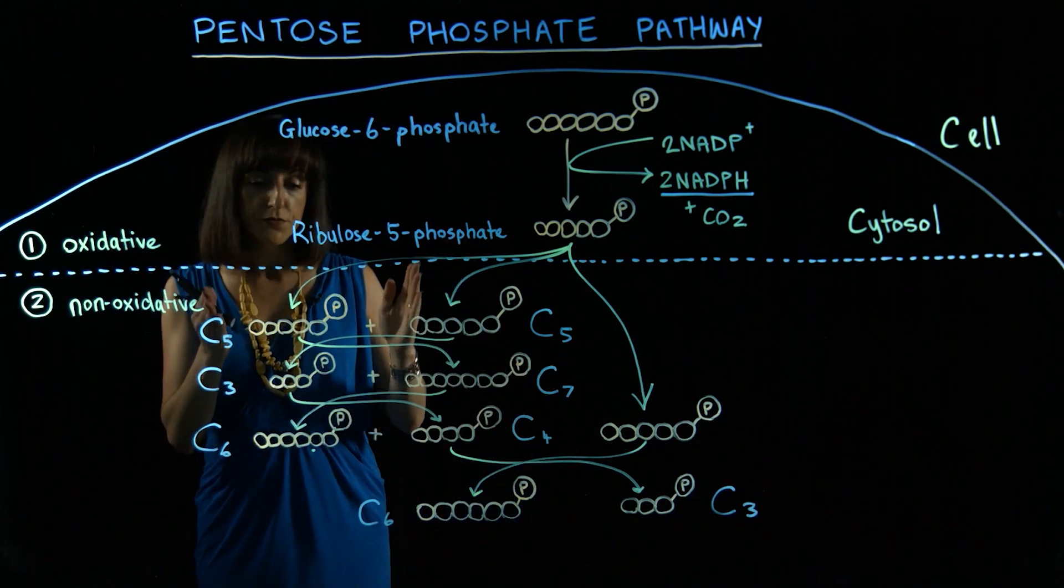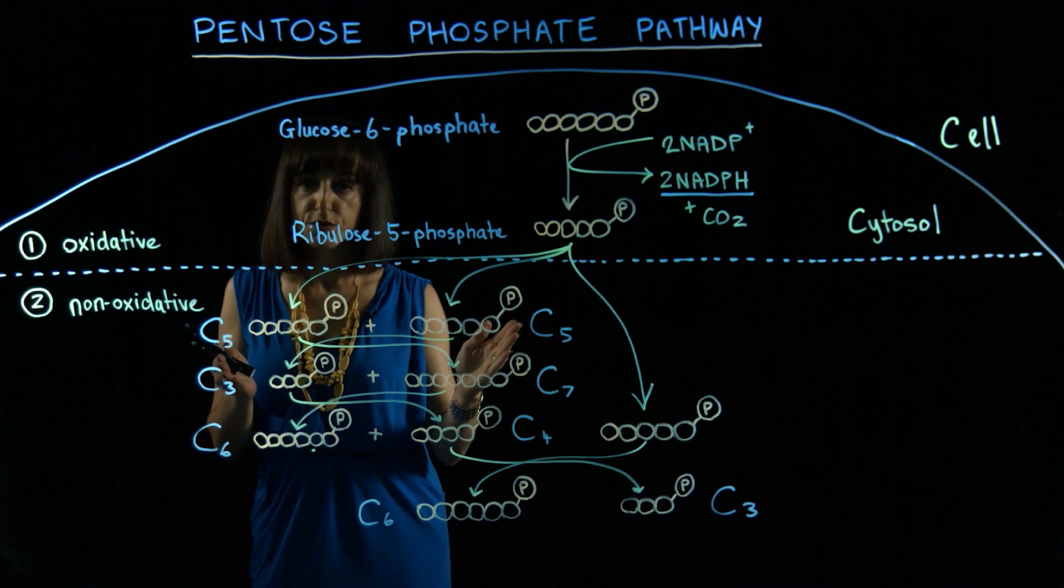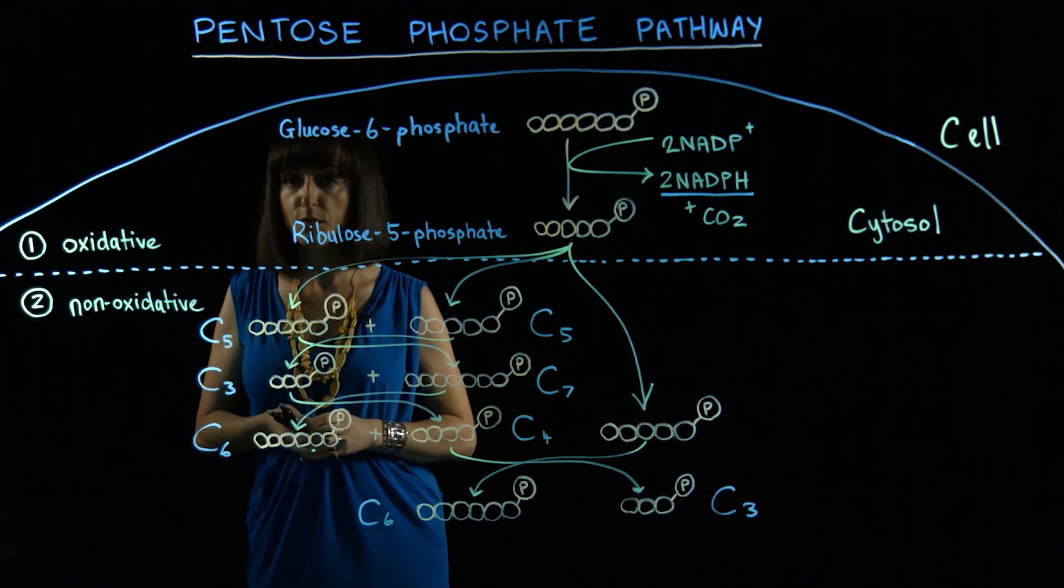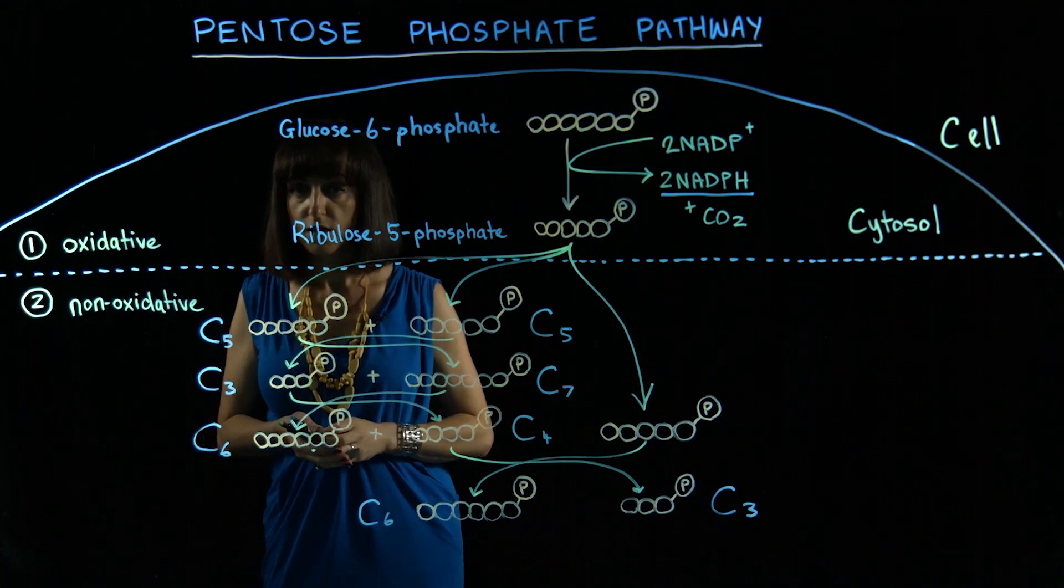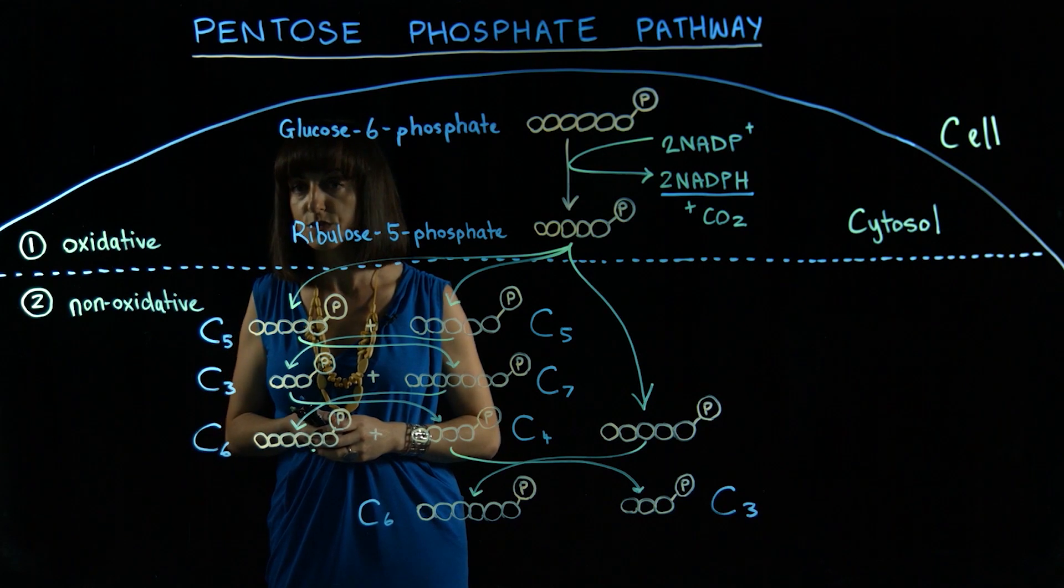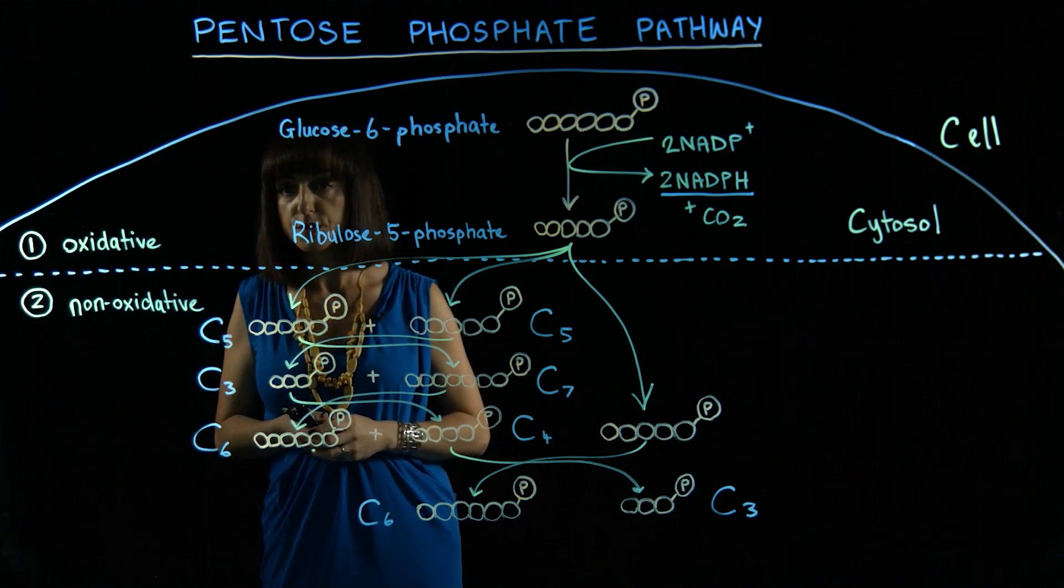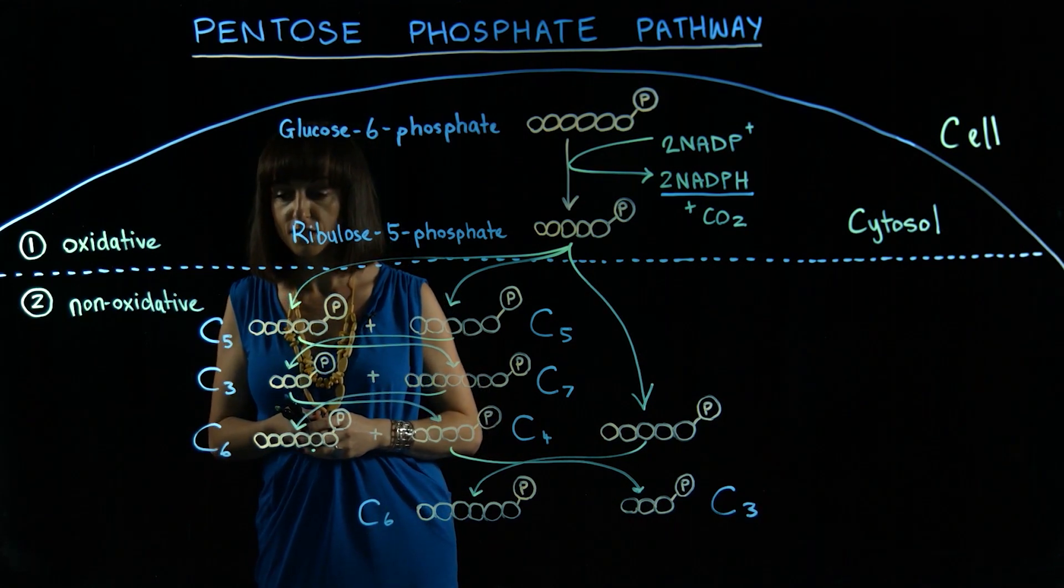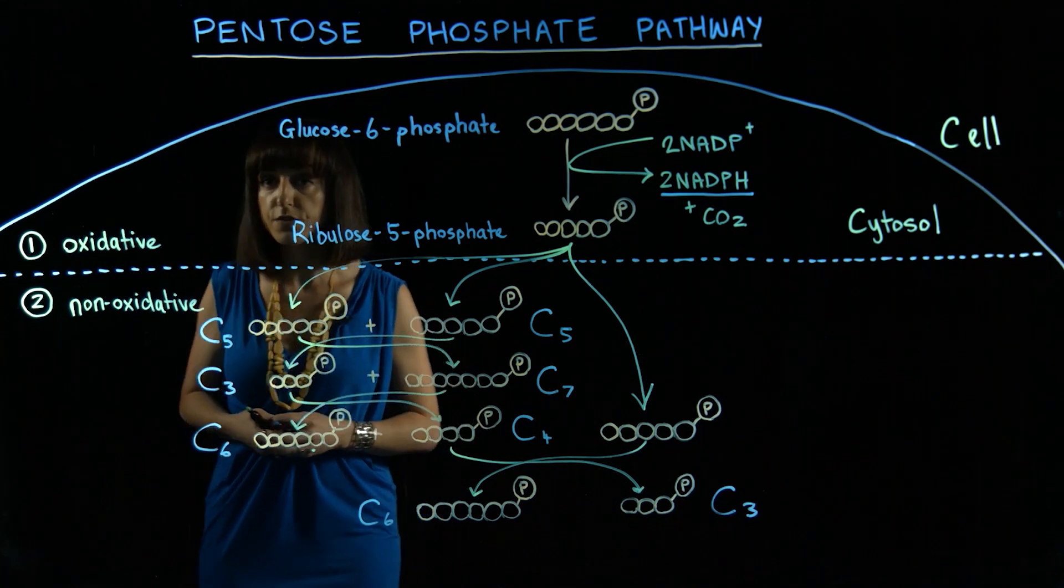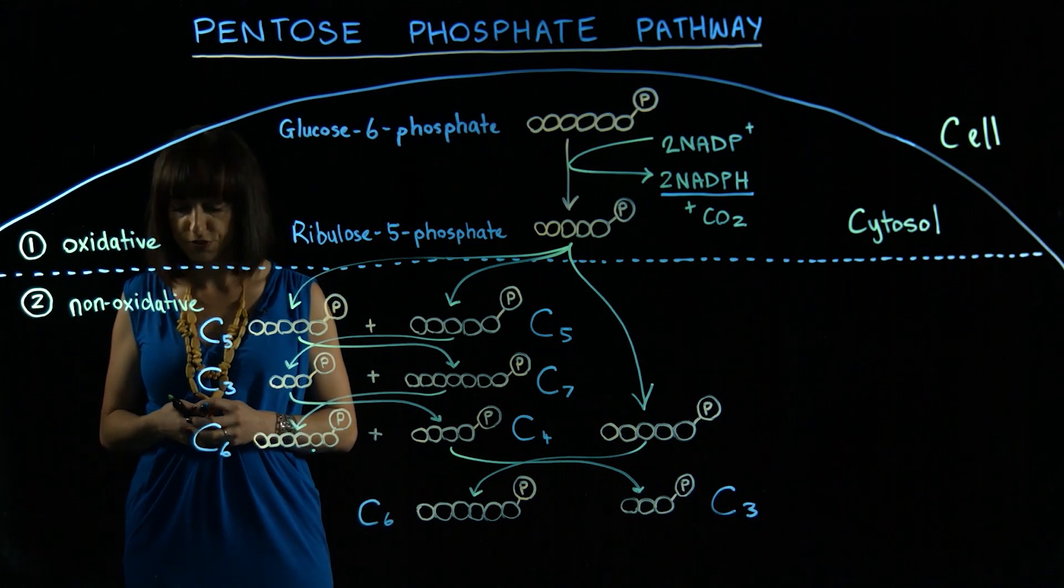The 5 carbon sugars can be used for the synthesis of nucleotides and aromatic amino acids, as well as some other molecules in the cell. And when there are excess 5 carbon sugars, they can then be used for the interconversion into some intermediates of glycolysis, the 3 and 6 carbon sugars called glyceraldehyde 3-phosphate and fructose 6-phosphate.